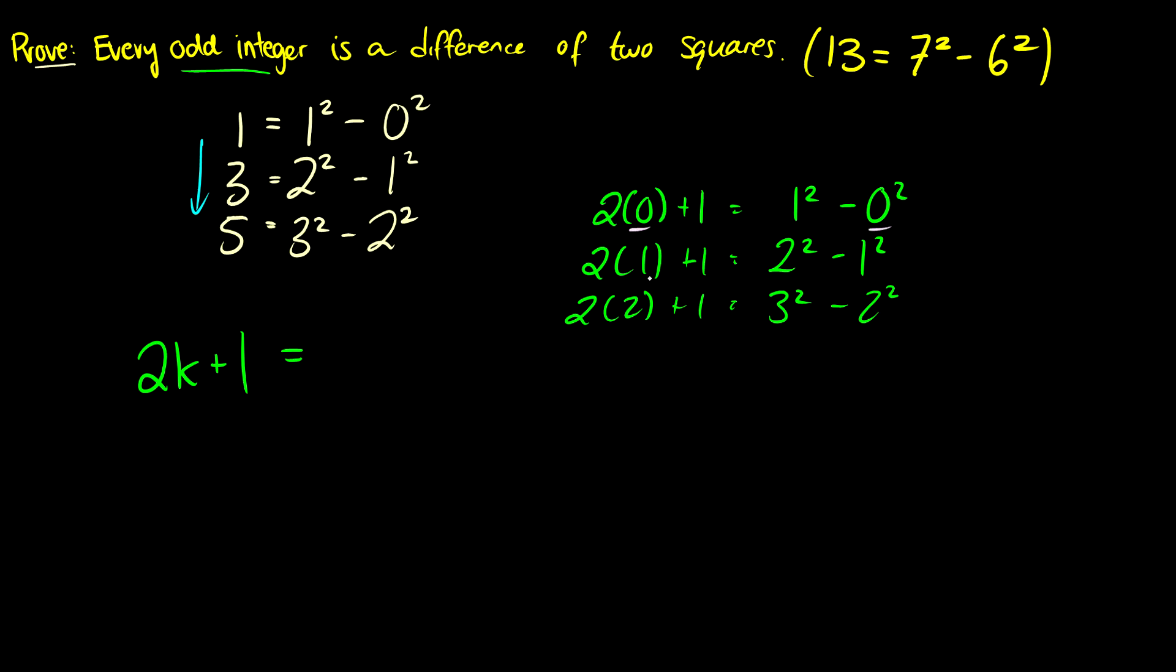Well we see a 0 here, a 0 here, a 1 here, a 1 here, a 2 here, 2 here, and then we add 1. So let's assume that if our k here, so I'm going to move this down a little bit so we have room to work. Okay, so this 2k plus 1 should equal k plus 1 squared minus k squared.